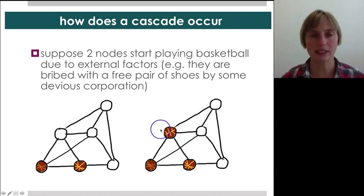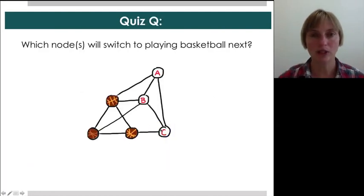Now, the quiz question is, can you figure out which node or nodes will switch to playing basketball next? Is it going to be just A, just B, just C, or some combination of these three?